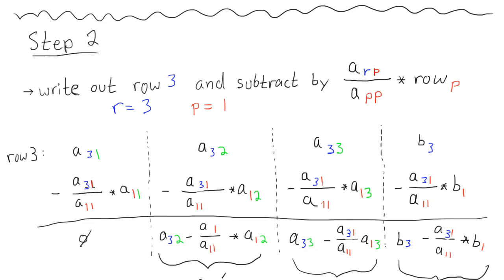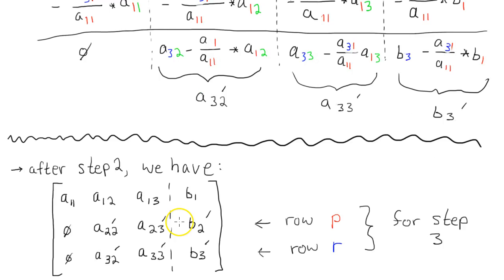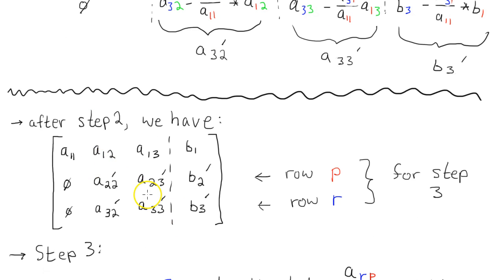Well, we can repeat this step. Yeah. So right here, we have two zeros. But we want a third zero right here. So we can repeat this step, except we need the pivot row to be down here.